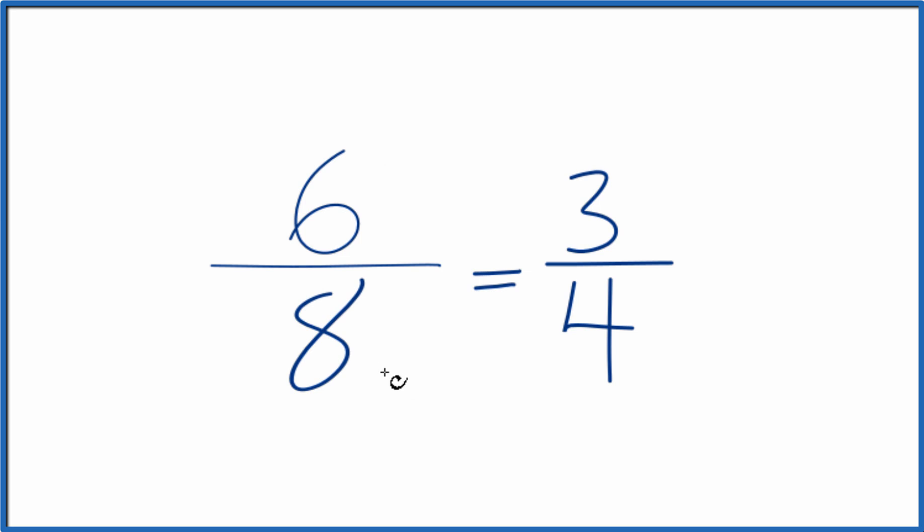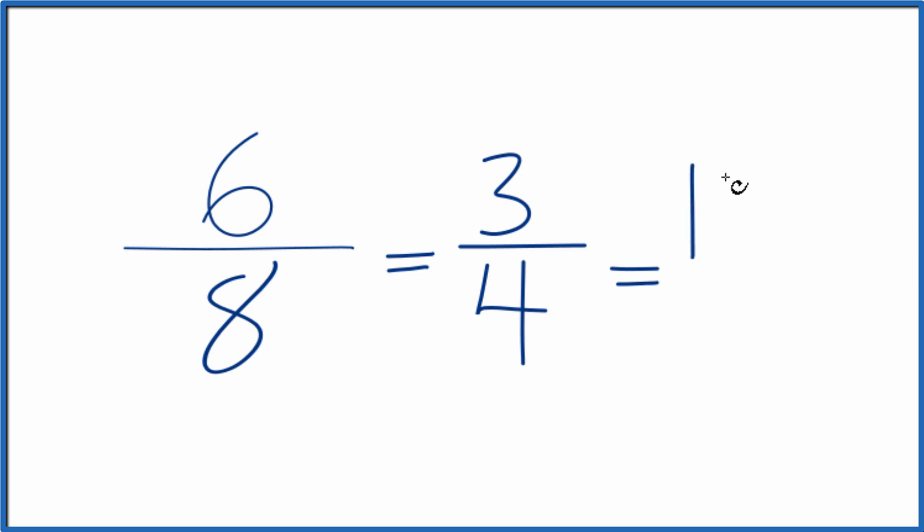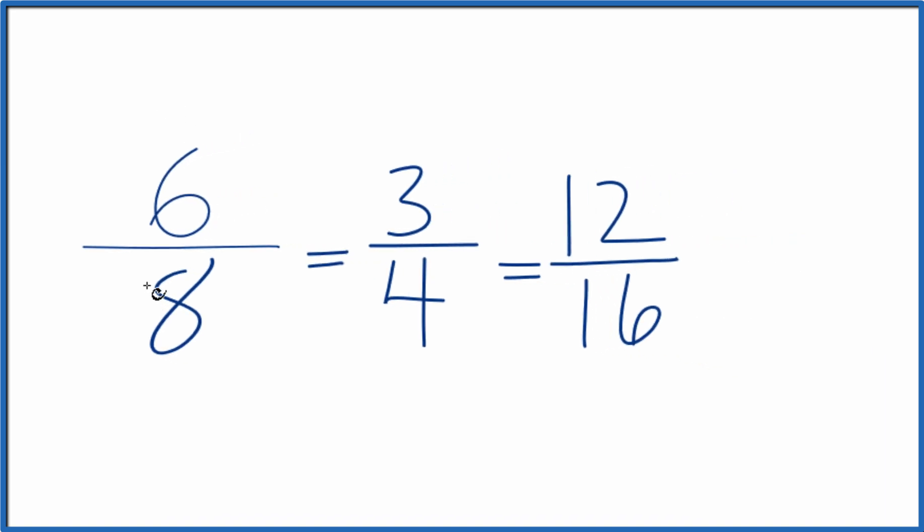Instead of dividing by 2 now, let's multiply the numerator and denominator by 2. 6 times 2 is 12, and then 8 times 2 is 16. And that's another equivalent ratio for 6 eighths.